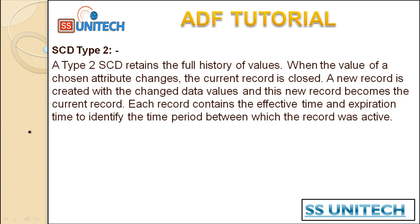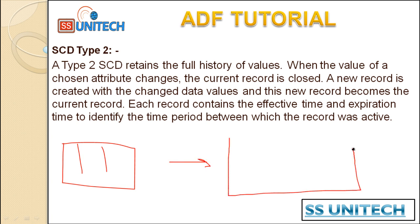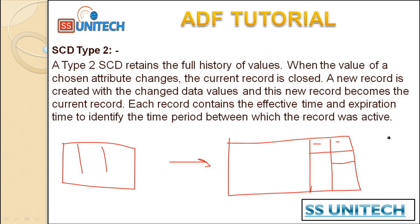Basically, we have a source with certain columns and on the sink side we can maintain SCD with historical data in two ways. First, we can add two extra columns — effective from and effective to — which indicate which record is currently active and which is not. If effective to is null, the record is active; if it has a value, the record is inactive. In the second approach, we add a single integer column holding a boolean value: 1 for active and 0 for inactive.